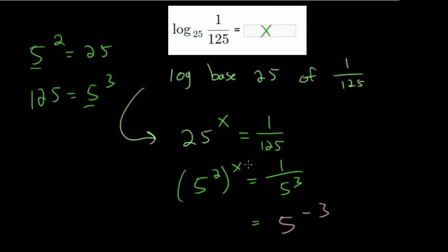And for this one, we have an exponent to an exponent. So we're going to multiply. So this is really just 5 to the 2x equals 5 to the minus 3. And now notice they have the same base. So for this to be true, their exponents must be equal to each other.